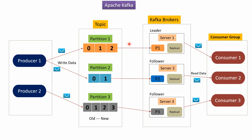Here you can see Apache Kafka architecture. Here you can see Kafka brokers. Server 1 is a Kafka broker which acts as a leader. Server 2 is a Kafka broker which acts as a follower. Server 3 is a Kafka broker which acts as a follower. And server 1 has partition 1, and server 2 has partition 2.